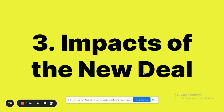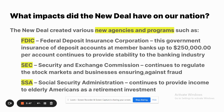The impacts of the New Deal include various new agencies and programs. The FDIC, or Federal Deposit Insurance Corporation, insures deposit accounts at member banks for up to $250,000 per account and continues to provide stability to the banking industry today. The SEC, or Securities and Exchange Commission, continues to regulate the stock market and businesses, and today it also insures against fraud in areas like cryptocurrency.